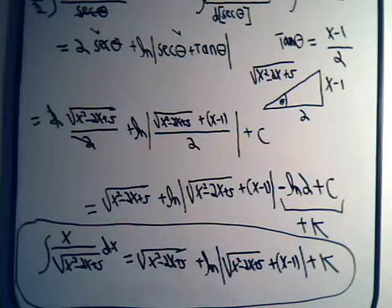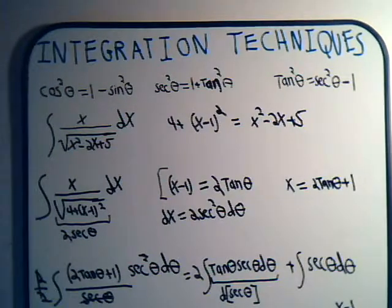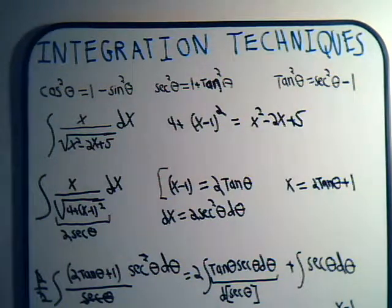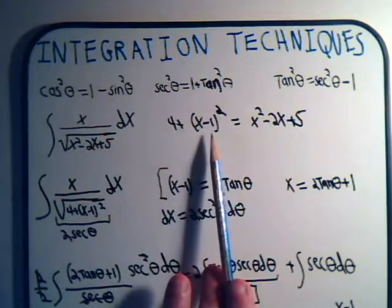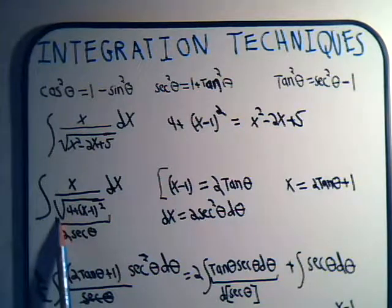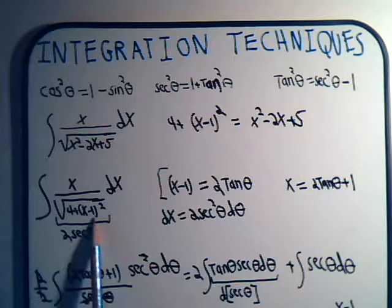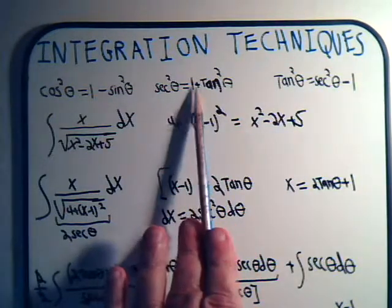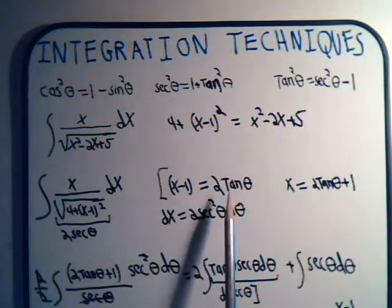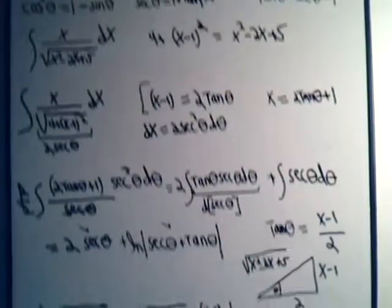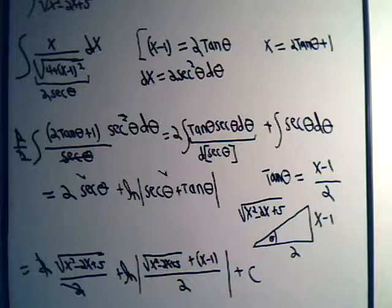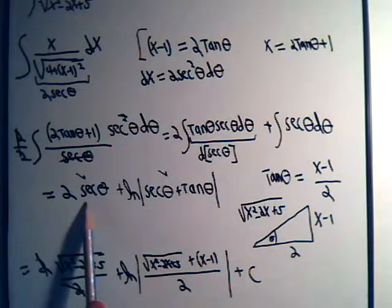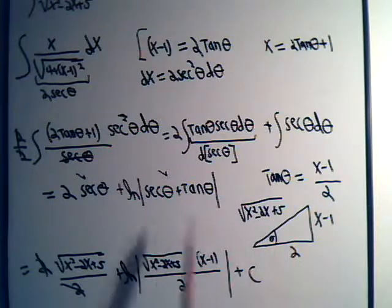It's a little convoluted, but the whole thing hinges on realizing we can't solve this with a simple u-substitution and it doesn't resemble basic identities. So we do a complete-the-squares operation so that the expression becomes a constant plus a variable squared, which matches the trig identity. We make the substitution, follow through to get two trig integrals, evaluate them, draw the triangle, and convert theta back into x. That's it for this problem — come back for more videos.